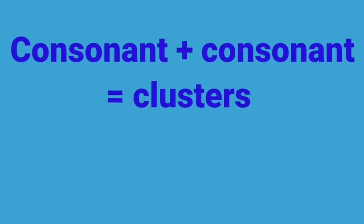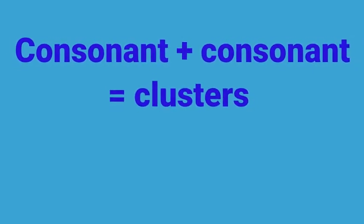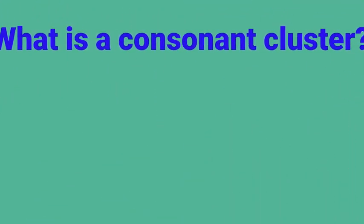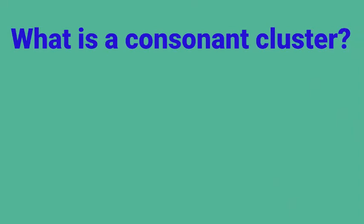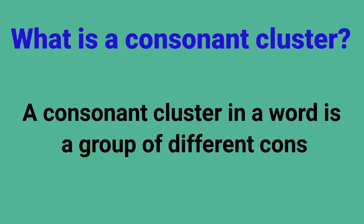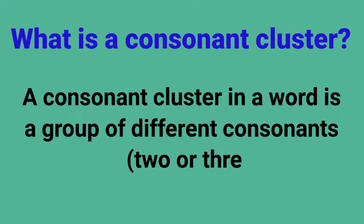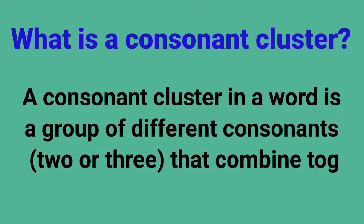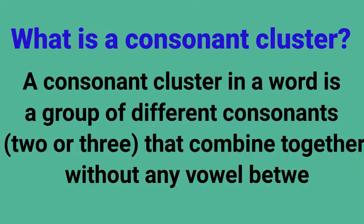اب ہم consonant کو ملاتے ہیں۔ جب دو consonant مل جائیں تو اس سے کیا بنتا ہے؟ What is a consonant cluster? A consonant cluster in a word is a group of different consonants — two or three — that combine together without any vowel between them.